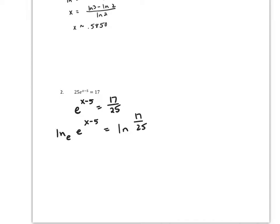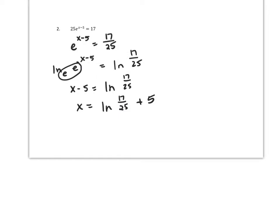Now, this is understood to be an e. When these match, the left-hand side will simplify to simply x - 5 equals ln(17/25). Now I'll add 5 to both sides. That's ln(17/25) plus 5. Using my calculator and rounding to four places, x is about 4.6143.